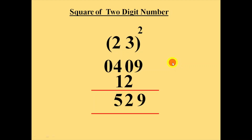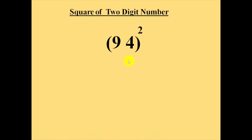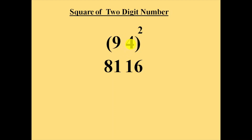Let's take a larger number this time. The square of number 94. Similarly as usual we will square the number 9 and write down here — 9 squared is 81. And then we will square the number 4 and write down here — 4 squared is 16. Then we will multiply 9 with 4 and that result we will multiply with 2. 9 into 4 is 36, and 36 into 2 is 72. We will leave this number 6 and write down 72 below this. Then we will add these two lines.